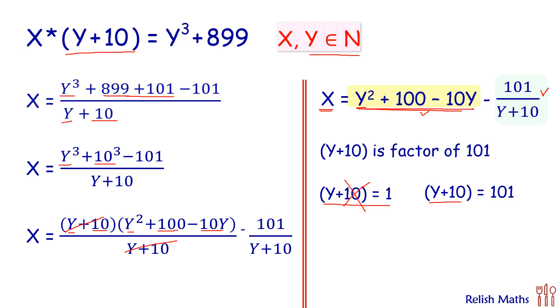Solving this, we'll get Y as 91. Putting this value in the equation, we will get X as 7470, and that's our answer.